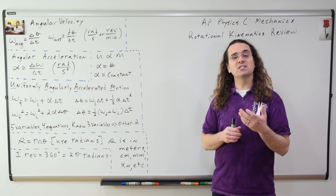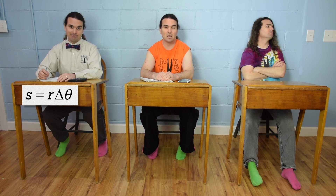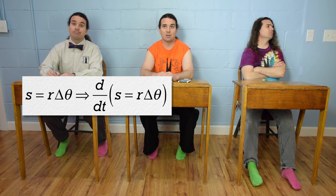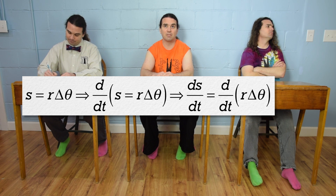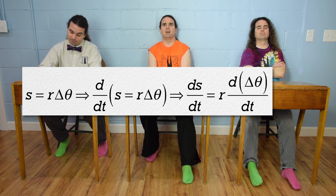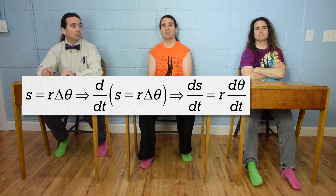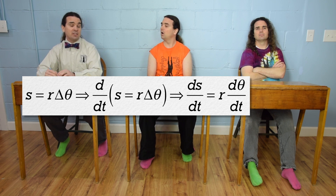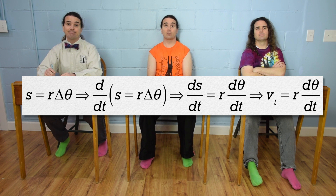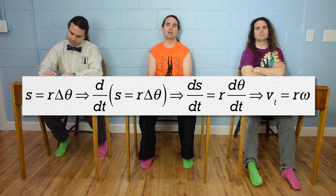Bobby, please take the derivative of the entire arc length equation with respect to time. Arc length equals radius times angular displacement. Taking the derivative with respect to time, assuming r is constant, we get the derivative of arc length with respect to time equals r times the derivative of angular position with respect to time. The derivative of arc length with respect to time is a tangential velocity, and the derivative of theta with respect to time is angular velocity. So we now have tangential velocity equals radius times angular velocity.